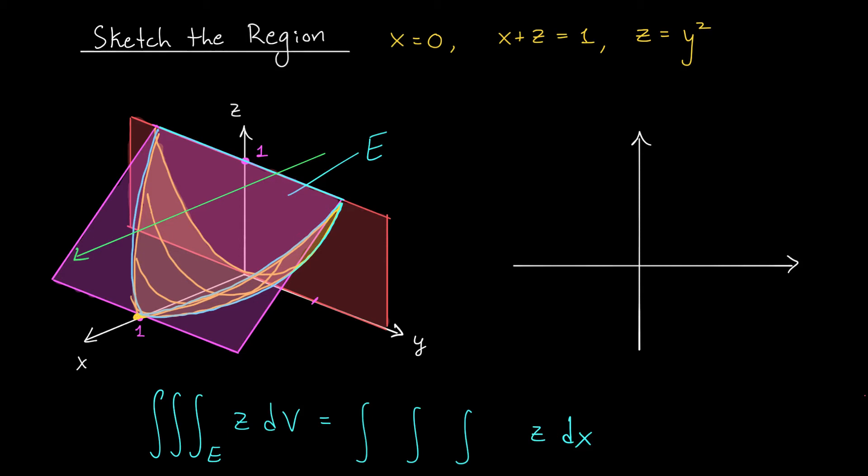You can see that it's going to enter our region through the back, through the plane x equals 0, and it's going to exit our region through the front, through this pink plane, x plus z equals 1. So, our lower bound on the integral is definitely 0, and for our upper bound, we just need to rewrite this equation with x as a function of the other variables. So, x is 1 minus z. 1 minus z is the upper bound.